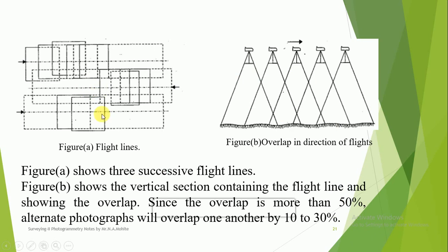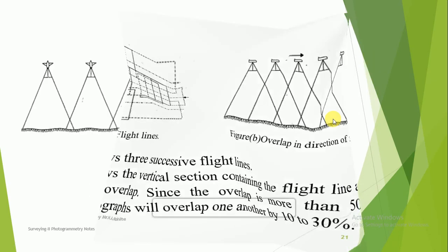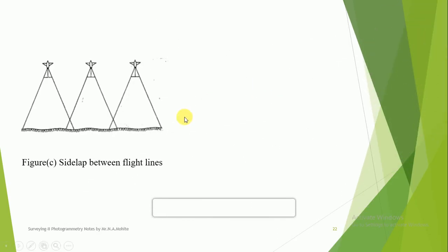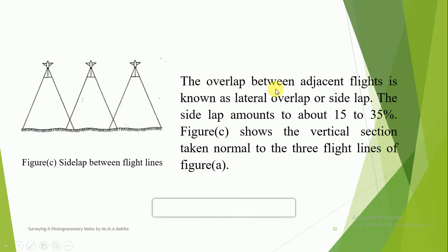The figure shows three successive flight lines and the vertical section containing the flight line showing the overlap — more than 50%. The first photograph is taken up to a certain point; the second has more than 50% overlap with the first. Successively, alternating photographs have an overlap of 10 to 30%. The figure also shows the cross-section or side lap between flight lines — overlap between adjacent flights, known as lateral overlap or side lap, restricted to 15 to 35%.